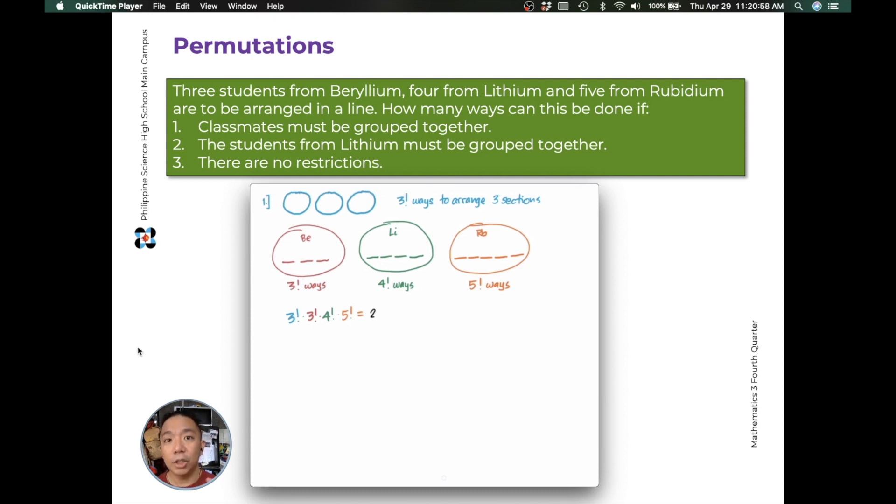Now 3 factorial in blue represents the number of ways to rearrange the sections, which section goes first. The red 3 factorial is the arrangements of beryllium students. The green 4 factorial is the arrangements of lithium students within their group. And the orange 5 factorial is the arrangements of rubidium within their group. So this is 25,920 ways to arrange our students.